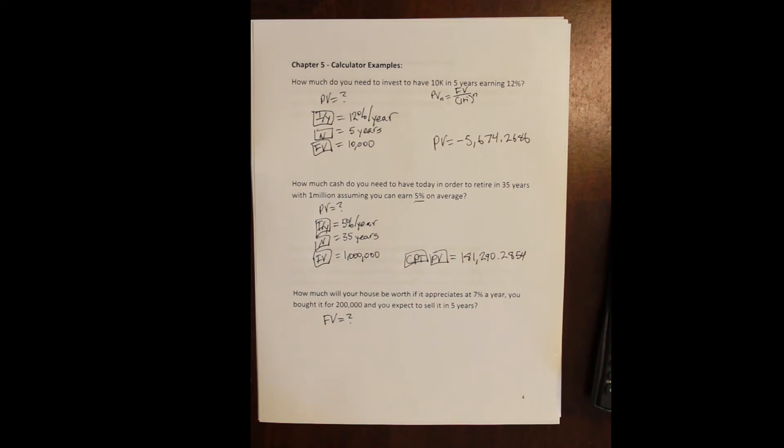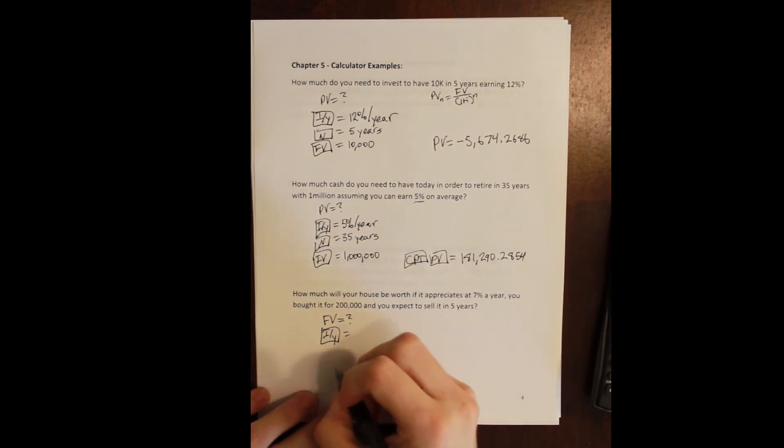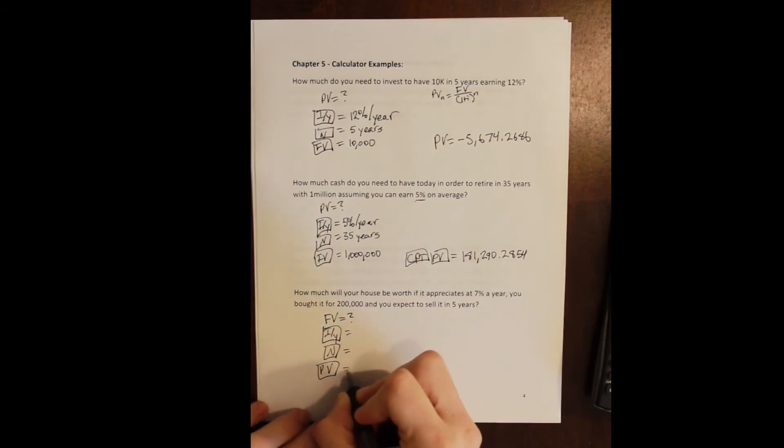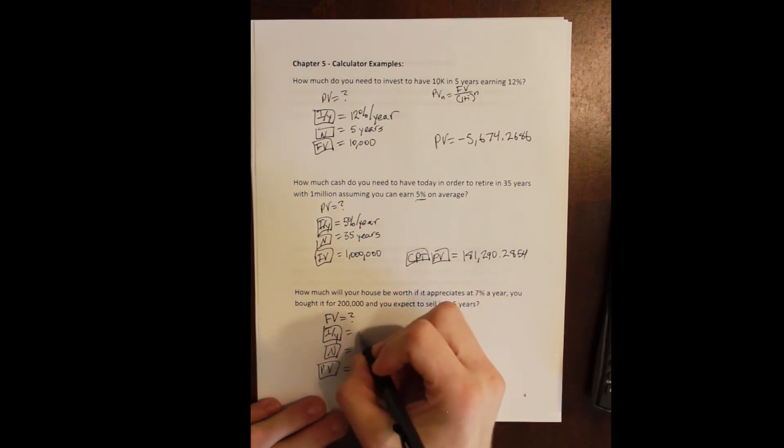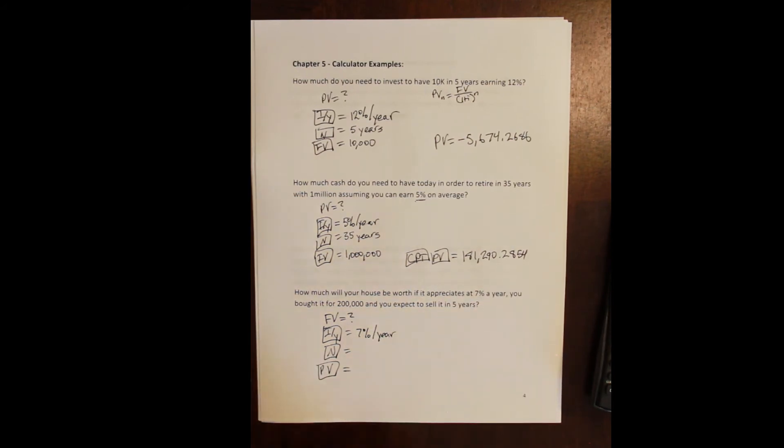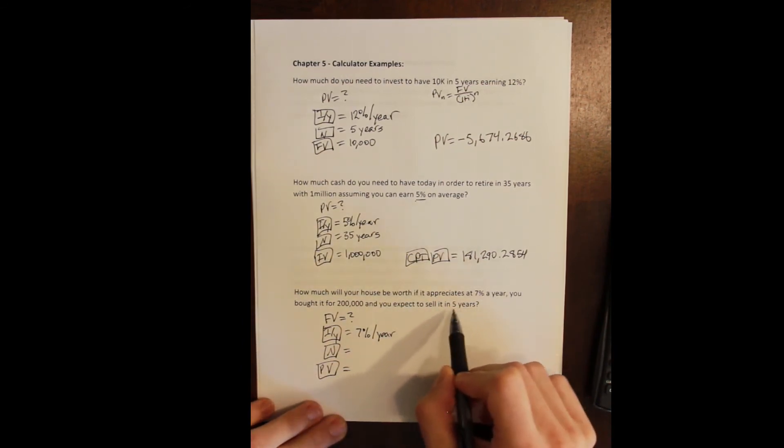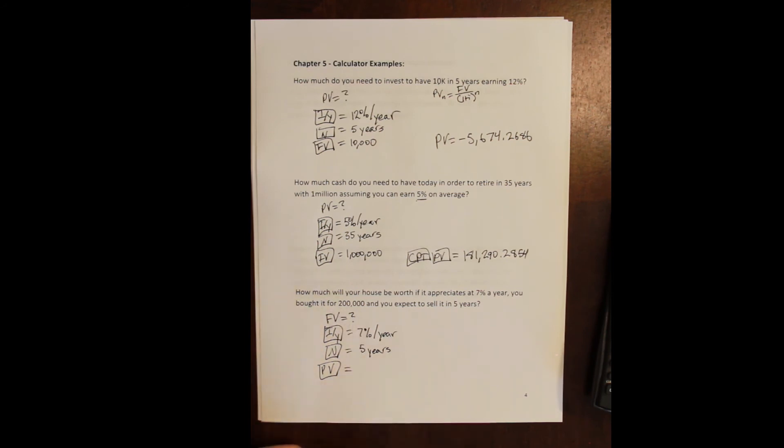Now the information that we need in order to solve the problem is pretty similar. We still need the rate, the number of periods, and what it is worth today - the present value - and then we can solve for the future value. The rate here is 7% per year. Again, the rate is usually what we're looking for to guide our understanding of what the compounding period is, because that's usually where we're going to find out that the compounding period is different than what we expect. The rate is 7% per year. Because we're using an annual period, we don't have to do any additional conversion. Our number of periods is five years. Our present value is what we paid for today, what the house is worth today, so we just bought it for $200,000.